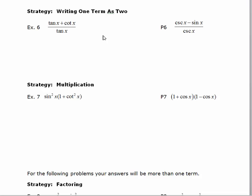So this first one I want to write tan x plus cotan x over tan x as two terms giving me tan x over tan x plus cotan x over tan x.